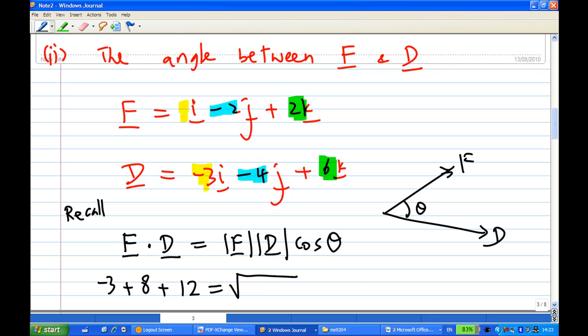The length of F is 1 squared plus minus 2 squared plus 2 squared. The length of D is minus 3 squared plus minus 4 squared plus 6 squared, and then multiplied by cosine theta.